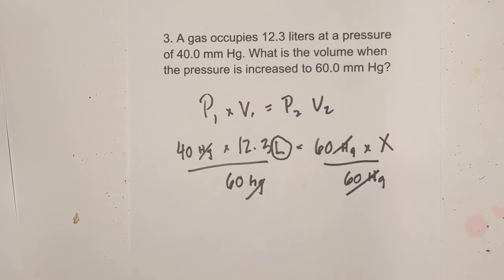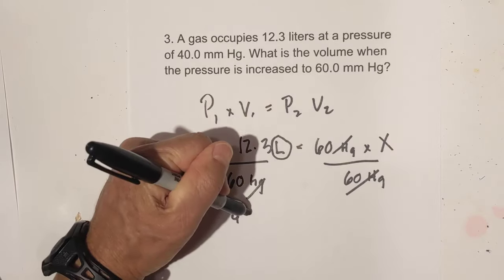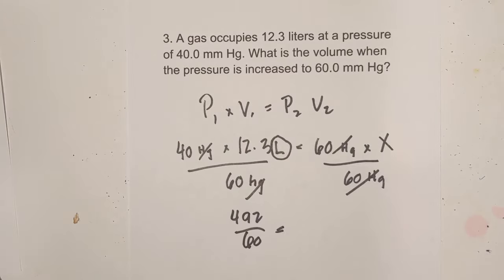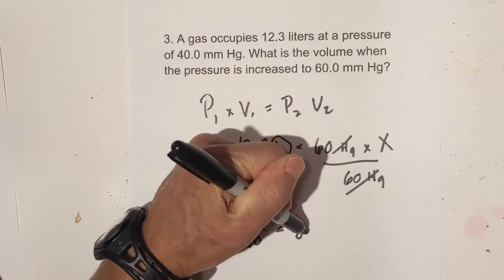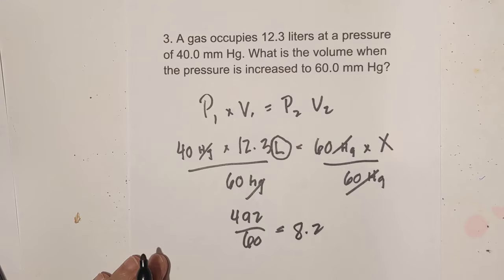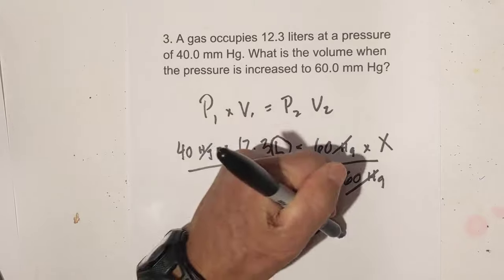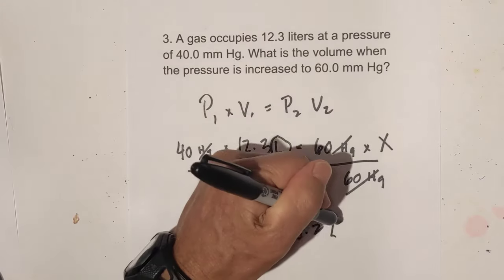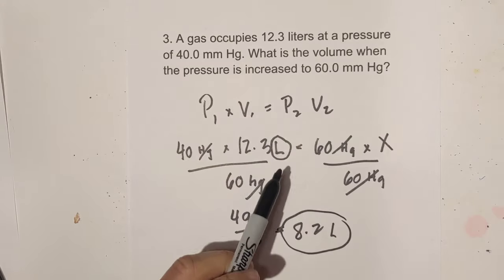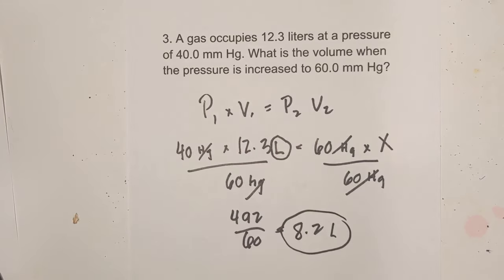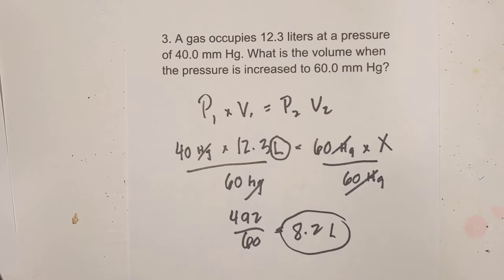And 492 divided by 60 is equal to 8.2. What is my unit of measure? It's looking for volume, and volume is liters. Now let's see if this makes sense. The pressure is increasing, and the volume is going down to 8.2. Let's work one more final problem.